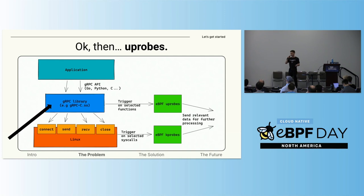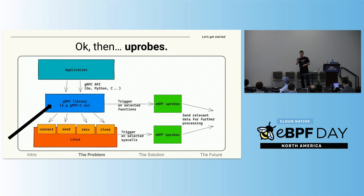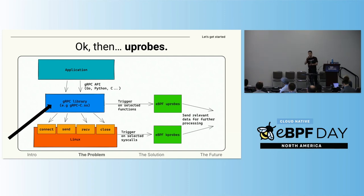eBPF also introduces uprobes — user-mode probes. They can be attached to user-mode functions, including library functions. Using uprobes, we can, just like with kprobes, see the arguments to the functions that we probe. So, probing inside the gRPC-C library can provide us information from the library's memory, even in the middle of the connection.